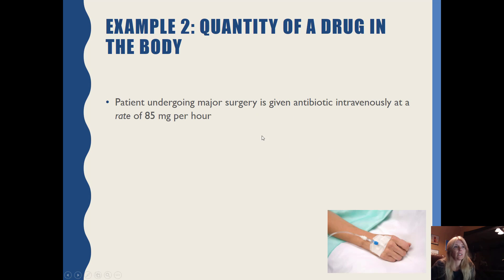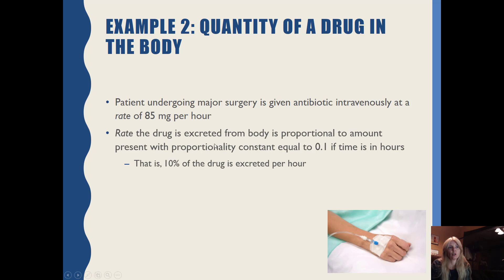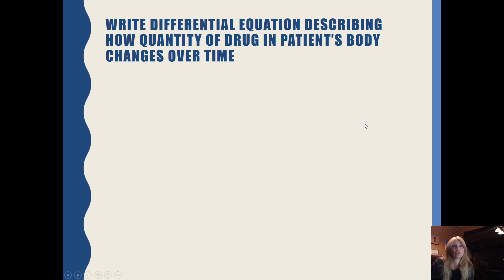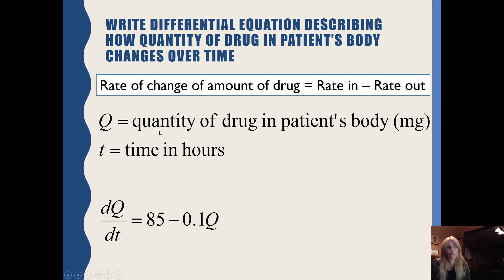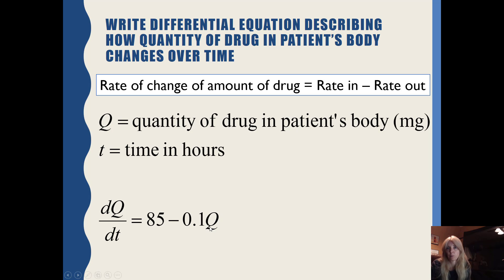Another example: a patient undergoing major surgery is given an antibiotic intravenously at a rate of 85 milligrams per hour — that's the rate in. The rate the drug is excreted from the body is proportional to the amount present with proportionality constant equal to 0.1 per hour, meaning 10% of the drug is excreted per hour. So we want to write a differential equation: the rate of change of the amount of drug equals the rate in minus 10% of the quantity present.